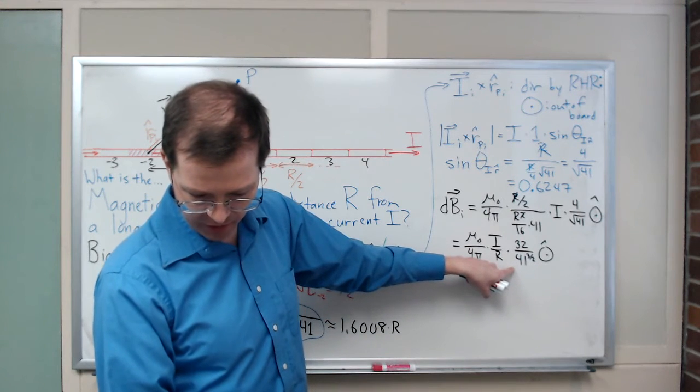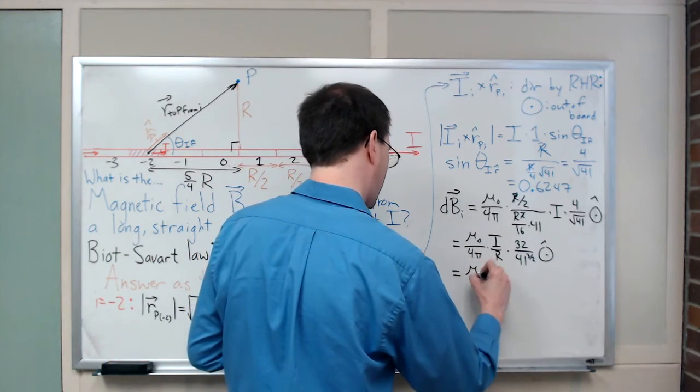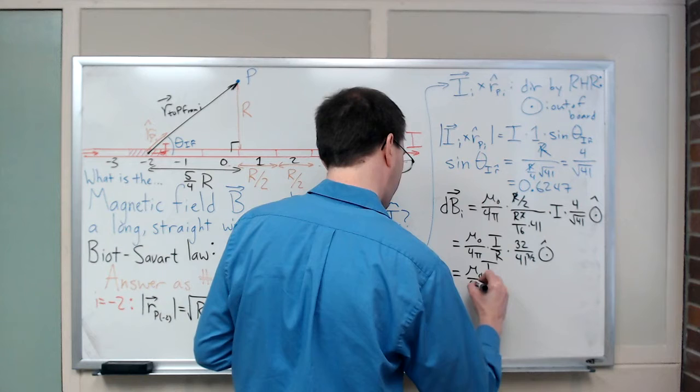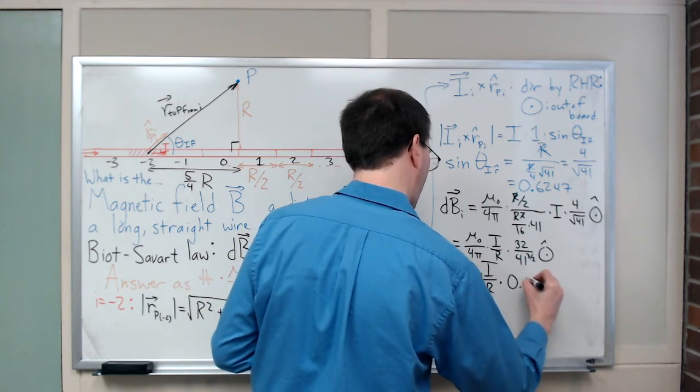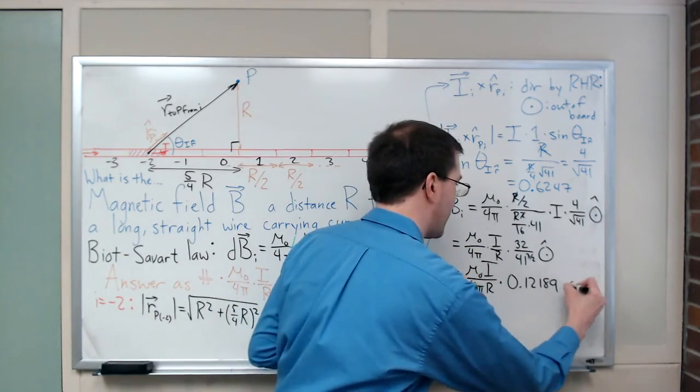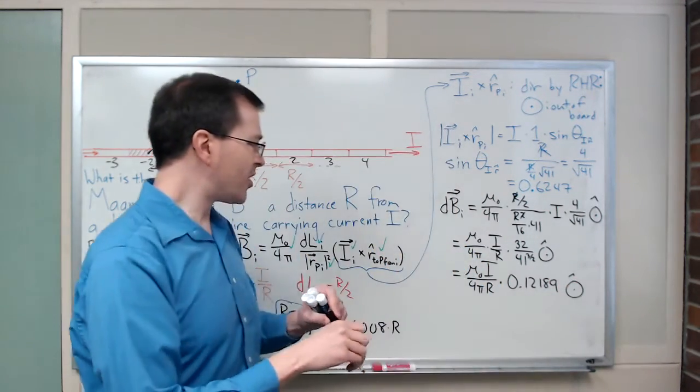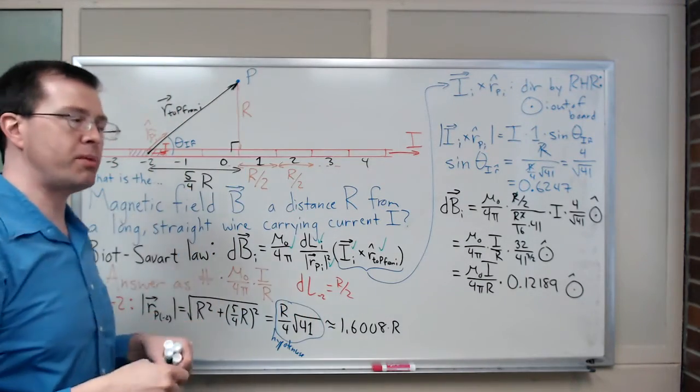I can put in a number for that, I get 0.12189. So I get mu naught I over 4 pi R times 0.12189, that's the number, and of course out of the board. That's the contribution of this one piece to the magnetic field at point P.